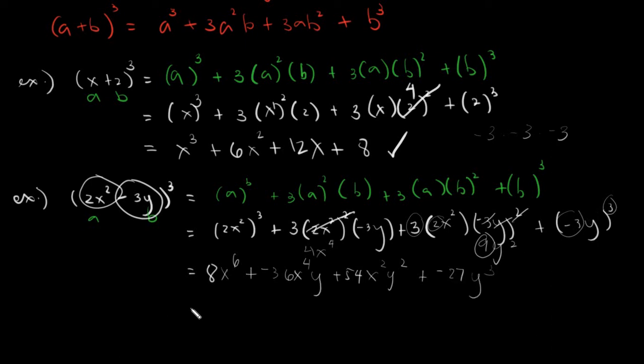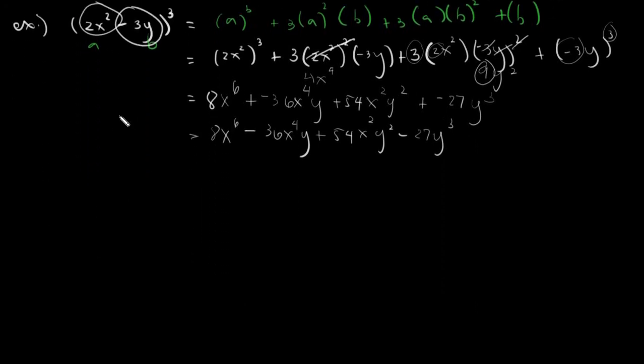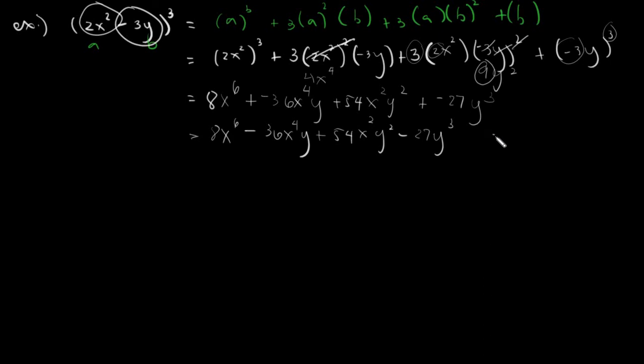Evaluating further, replacing the plus minuses, we'll have 8X raised to 6, minus 36X raised to 4Y, plus 54X squared Y squared, minus 27Y cubed. This will be your final answer because you're already fully evaluated.